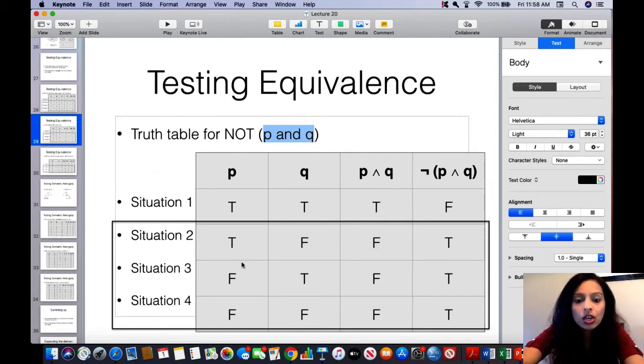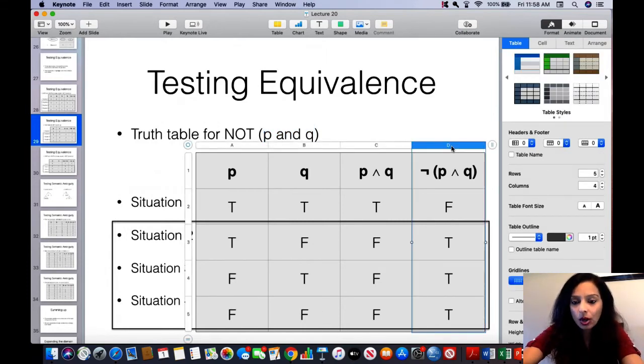So, true-true is true, true-false is false, false-true is false, and false-false is false. And then you have your column D, which is putting the negation in front of P and Q. So, you get false, true, true, true, right?